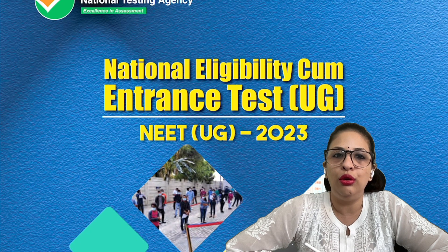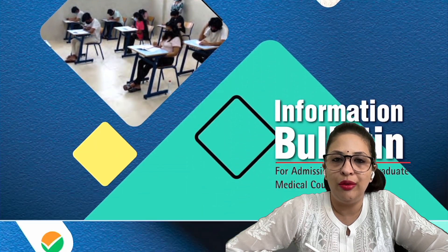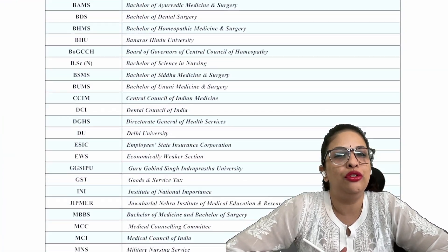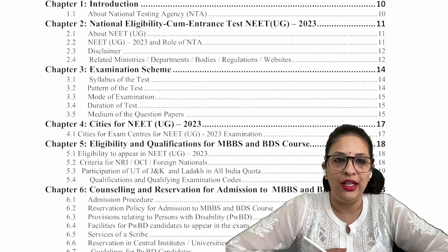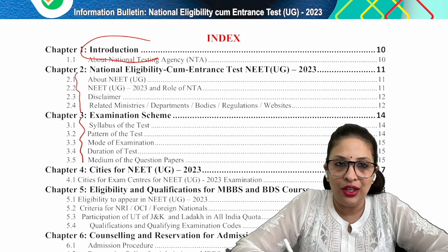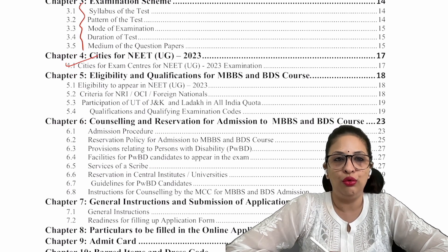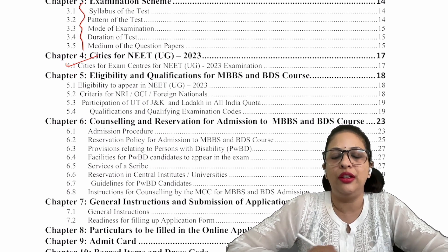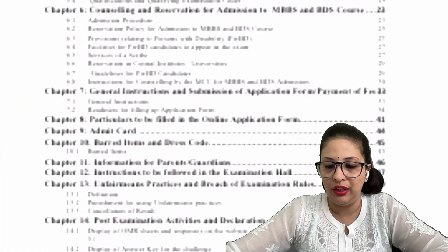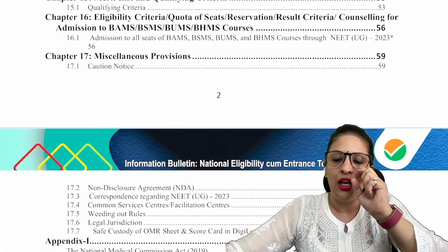You will be able to read the information bulletin — this is the NEET entrance test, the NEET 2023 information bulletin. The information bulletin covers the examination scheme, syllabus, pattern, mode of exam, duration, medium, cities, reservation, and eligibility. There is a lot of important information in this bulletin and today we will talk about that information.